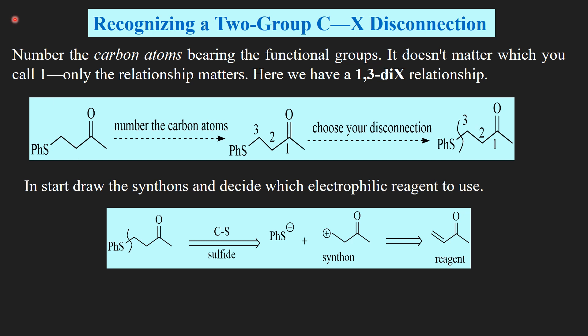Next is recognizing the two-group C-X disconnection. How to recognize? The key step in recognizing the relationship between two functional groups is to number the carbon atoms bearing the functional groups: here it is 1, 2, and 3. It does not matter which you call 1, only the relationship matters. Here we have a 1,3-di-X relationship. The two functionalized carbon atoms have a 1,3-relationship.